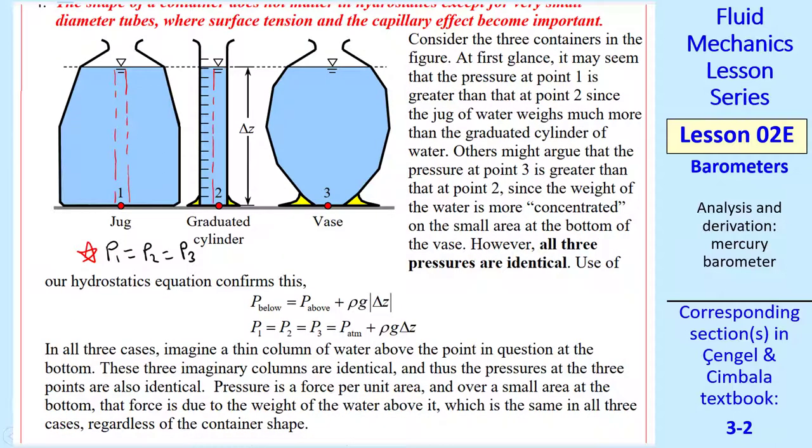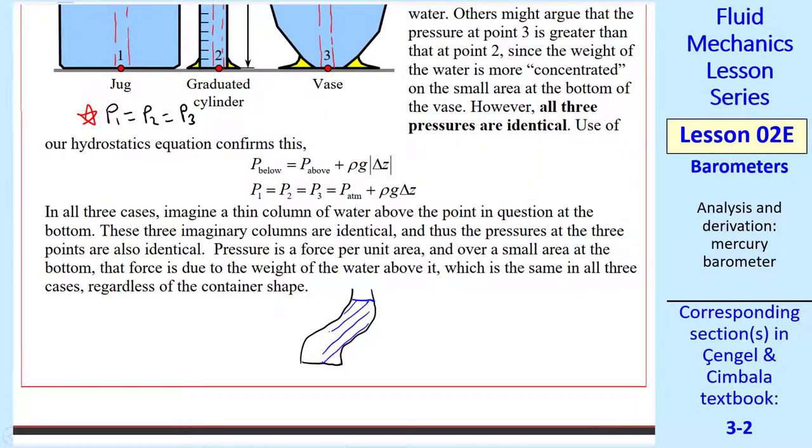Our workhorse equation for hydrostatics confirms this, because there's the same Δz for all three cases. Thus, all the pressures are equal to p_atm + ρgΔz. If you're not convinced, draw a thin column of liquid above each of these three points. Ignoring the water surrounding this column, we see that each of these three has exactly the same column height above it, and therefore the same pressure. This would even be true for a funny-shaped container where you can't really draw the column height above it. Even so, p₄ = p₅ for this case, since Δz is the same.